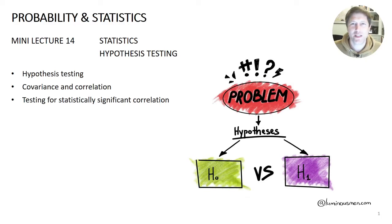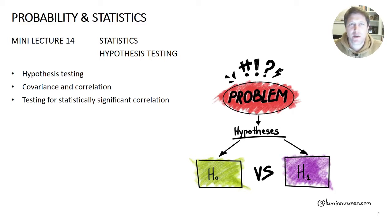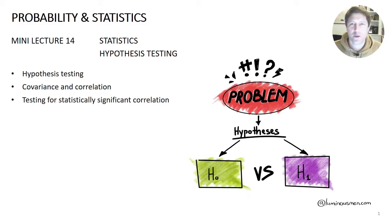Welcome to Mini Lecture 14. Now we're going to start using our understanding of probability, distributions, and experiments to work out some useful things from data we can measure. This is going to look at hypothesis testing, covariance and correlation, and testing for statistically significant correlation — using everything we've learned so far to work out useful engineering things.